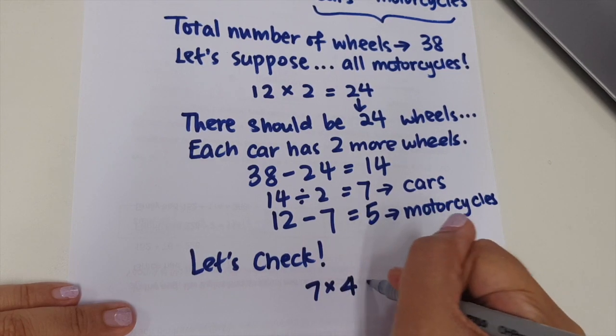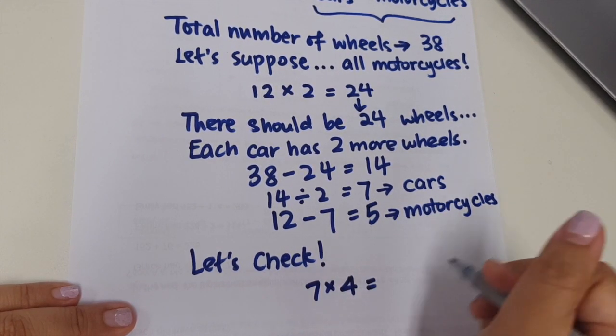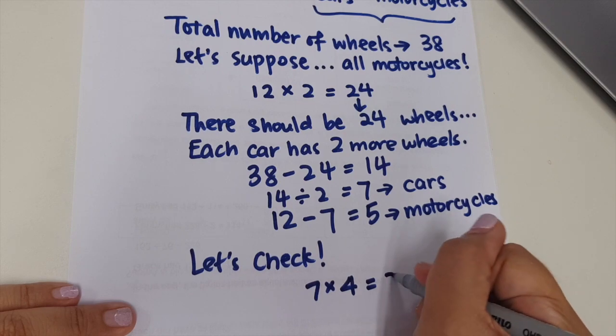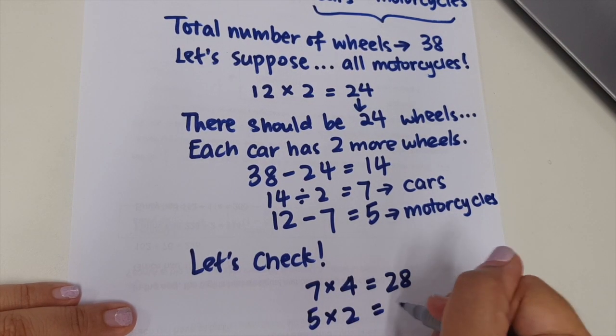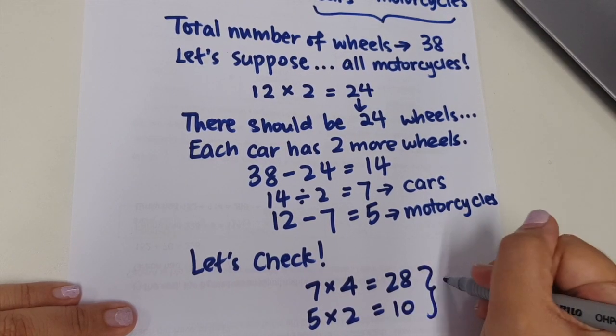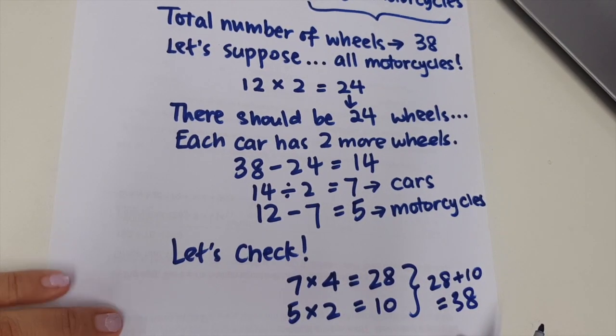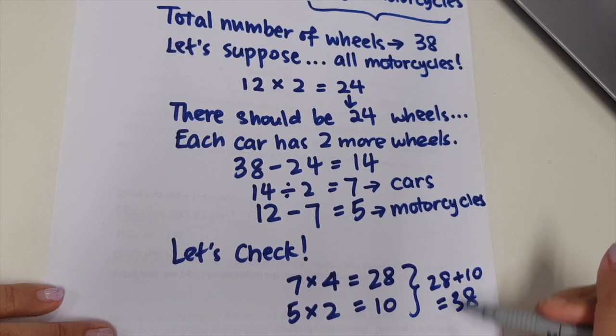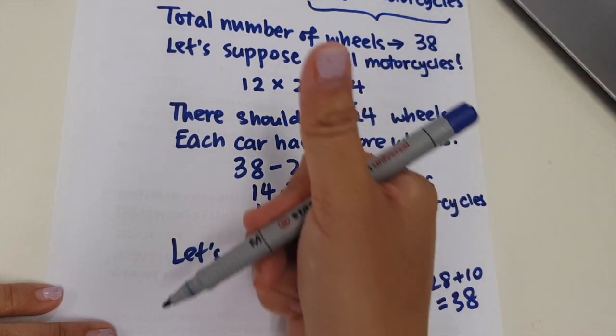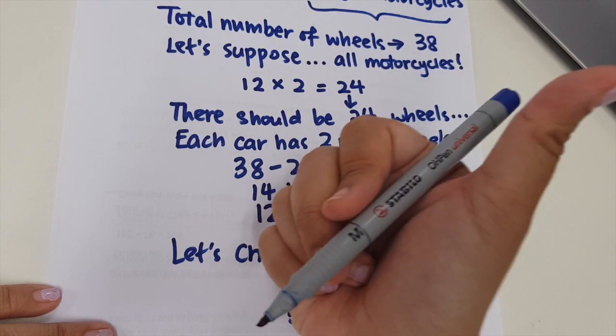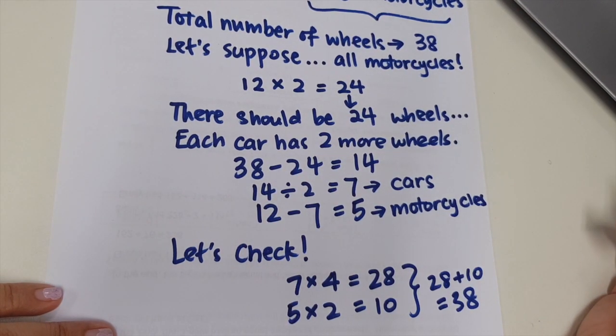So here, let's check. If I have seven cars, I'll have four wheels each, 28 wheels. And if I have five motorcycles, I'll have two wheels each, total 10 wheels. And if I add them up, 28 plus 10, I got 38 wheels, which is yes, I got back the number in the question. I found the correct answer. And with my check, I reviewed and I know that my answer is the same, that if I work backwards, it's the same.